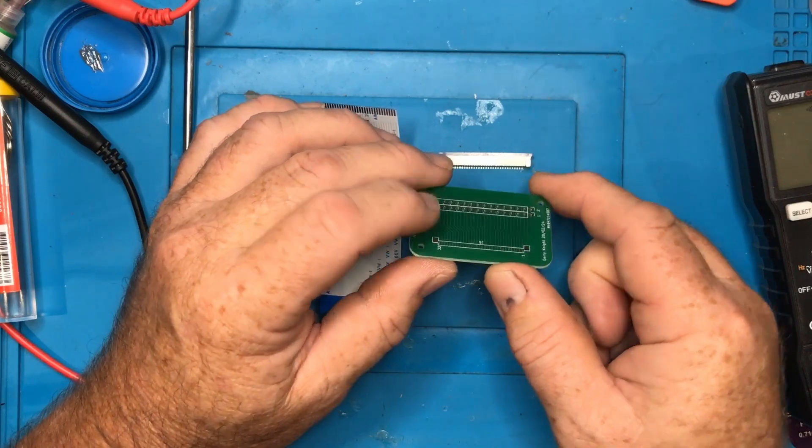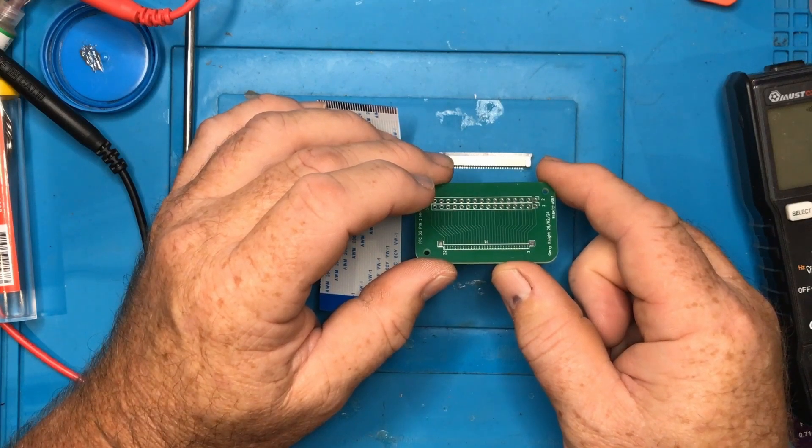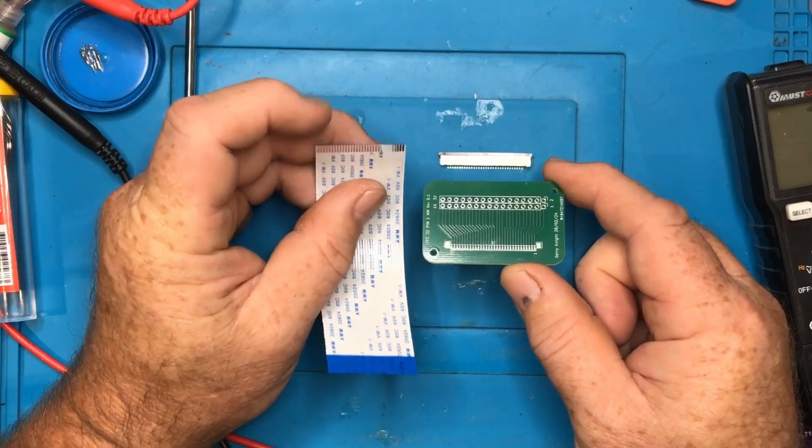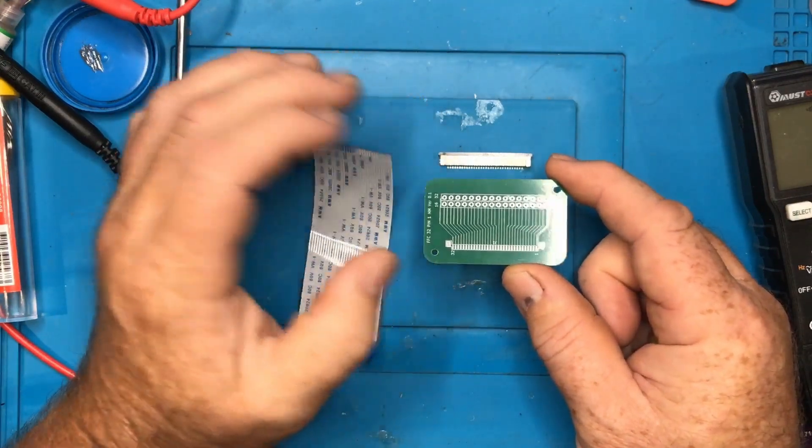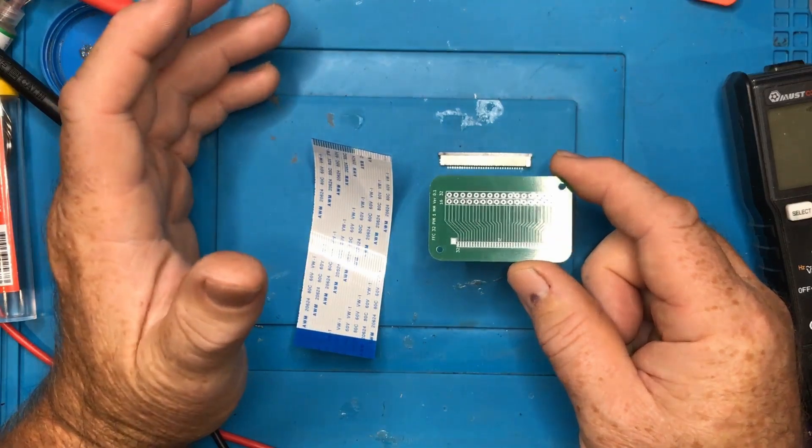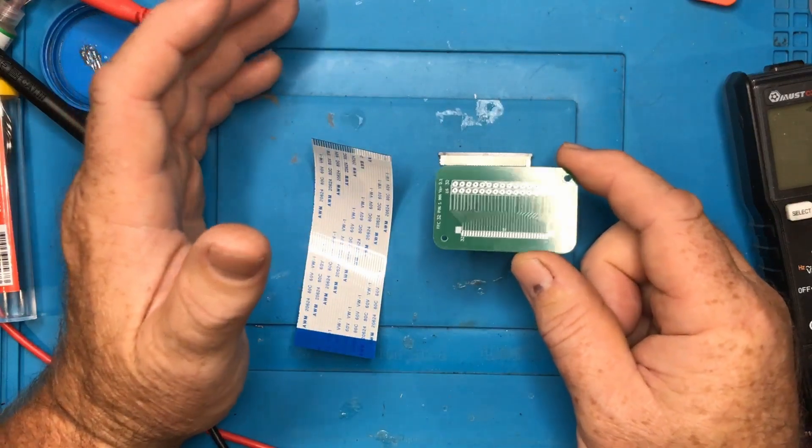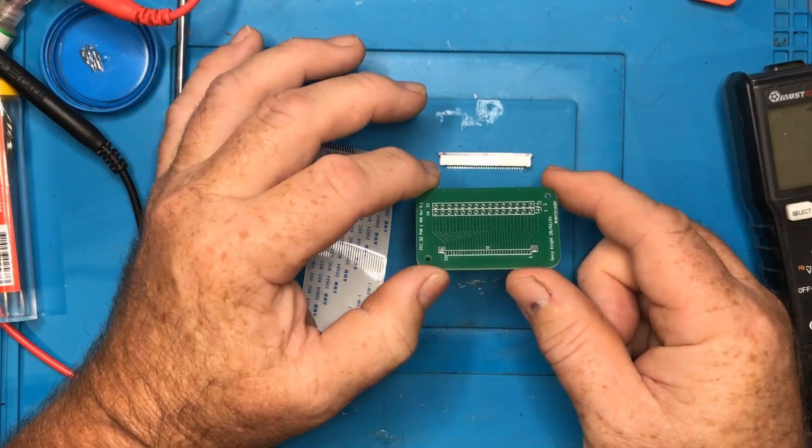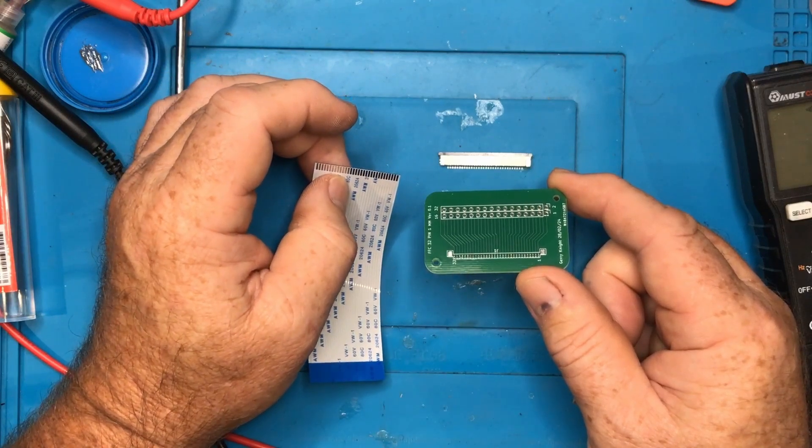I was forced into doing this because I couldn't find one of these particular ones online. The spacing of this was 1mm and 32 pins, and there were plenty of 0.5mm 32 pins or 1mm 30 pins, but there weren't any breakout boards I could find that were a combination of 32 pins with a 1mm pitch.